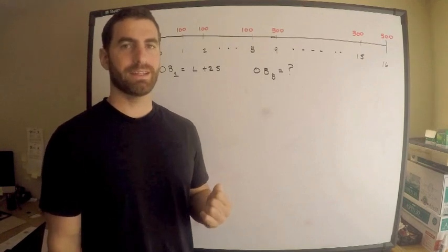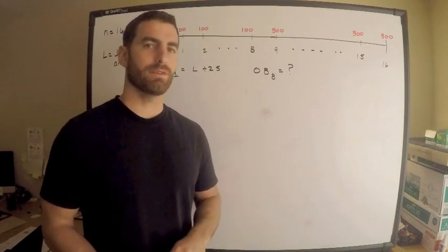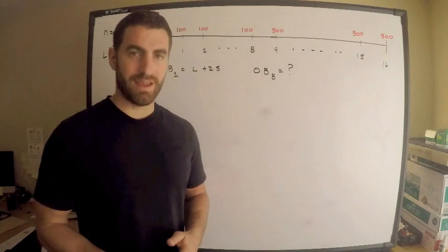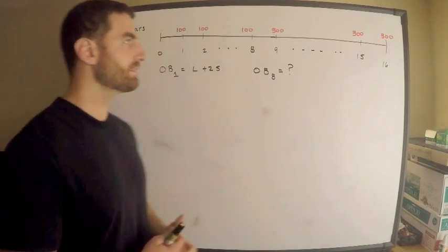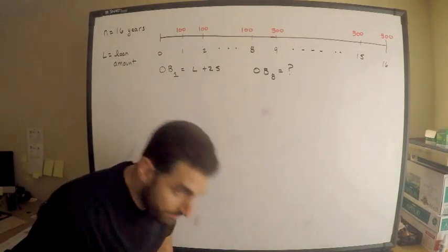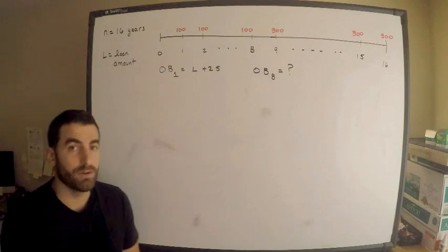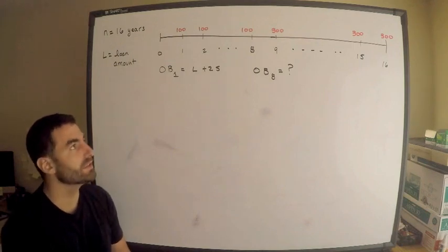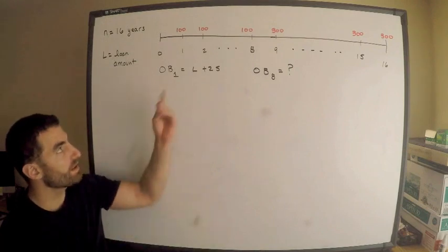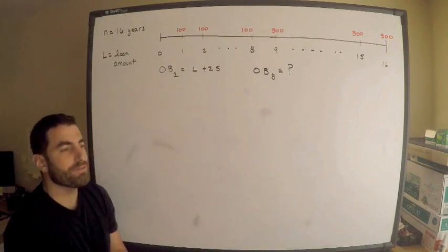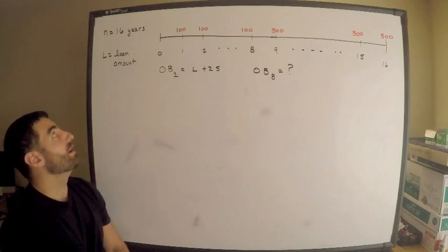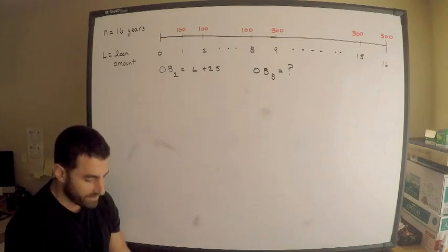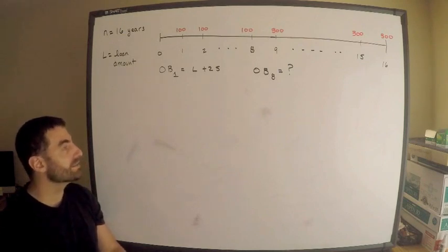Thank you for subscribing to Manzanelli's Math Lab. The topic is financial mathematics — exam FM. We have a loan with 16 end-of-year payments: the first eight payments are $100, after which the payments go up to $300. L represents the loan amount.